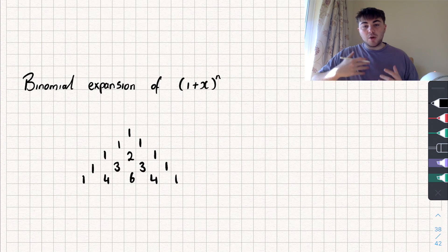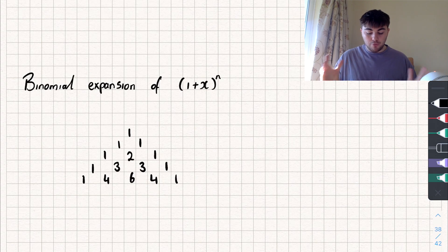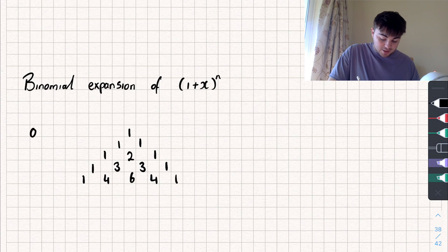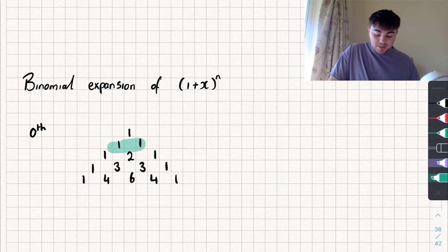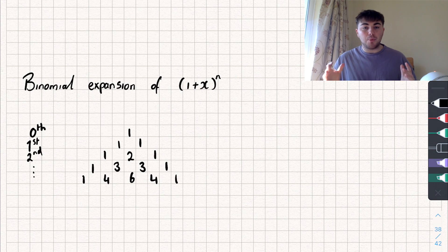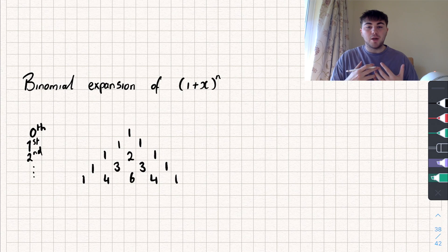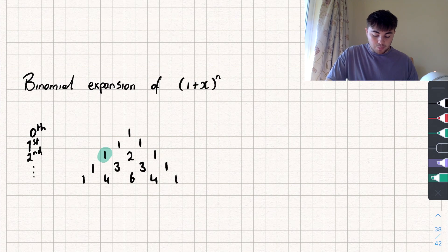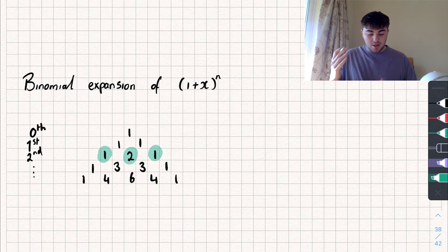The only other thing I'm going to mention is when it comes to the rows and columns, when we count them, we start from 0. So the rows of Pascal's triangle — this top one here is the 0th row, then this is the 1st row. So we start from 0: 0th, 1st, 2nd, and so on. The same thing applies with the columns — this would be the 0th column, then 1st column, 2nd column, like that. So it starts from 0 when we're counting with Pascal's triangle.